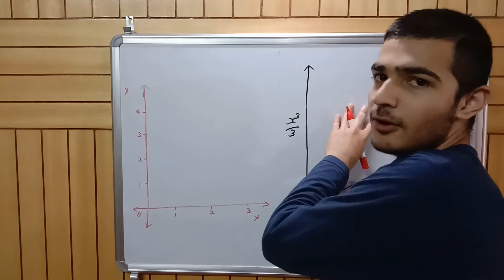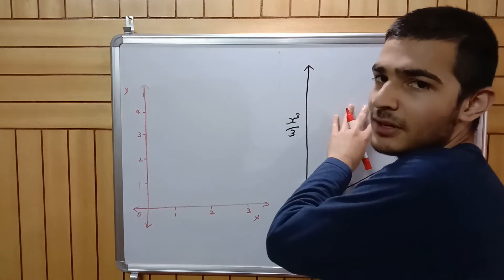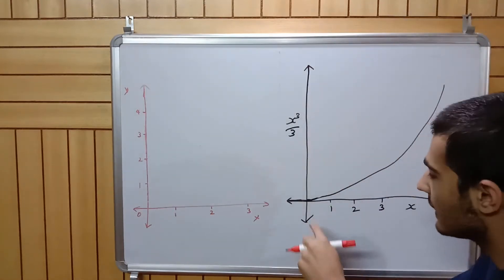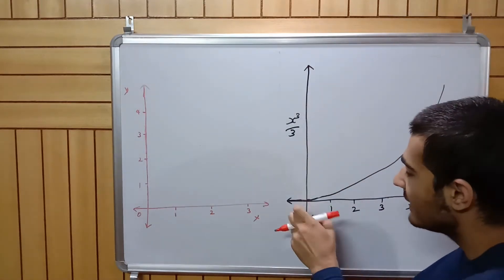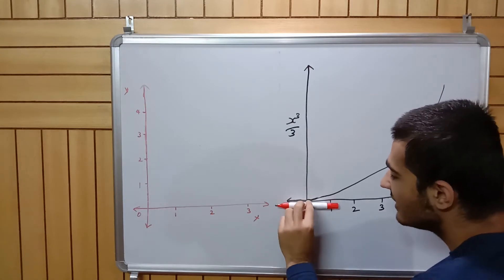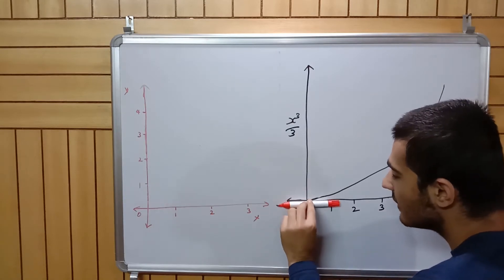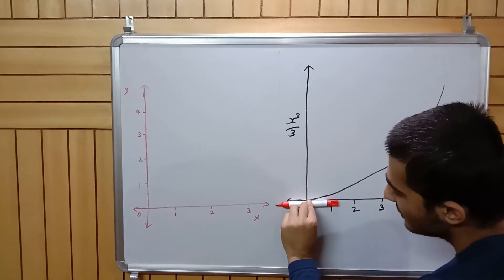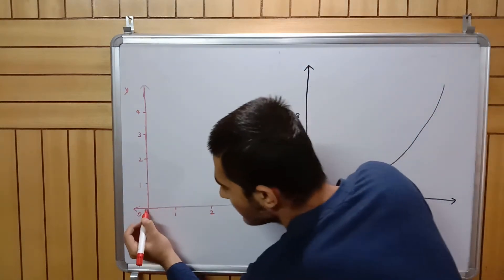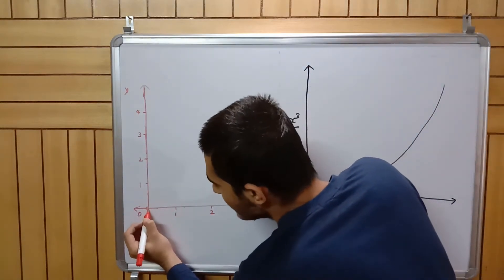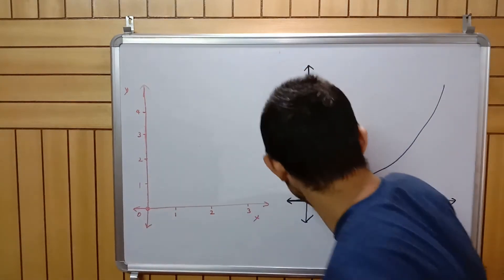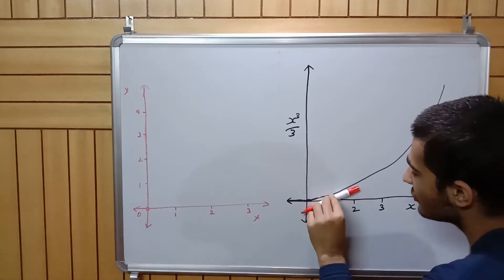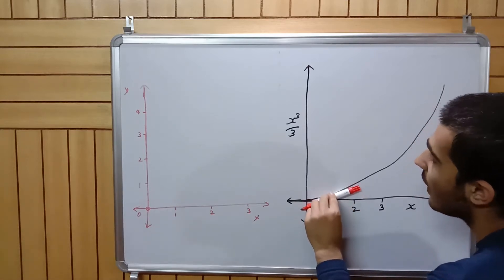I'm going to plot the derivative function of this function. At x equals zero, the tangent is flat and the slope of this tangent is clearly zero, so I plot zero there. At zero I get a zero.